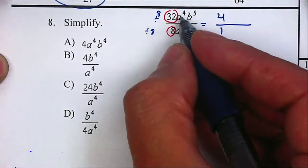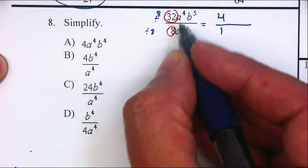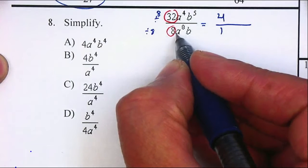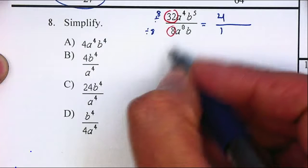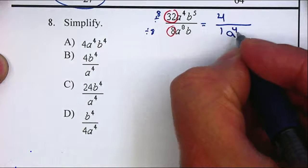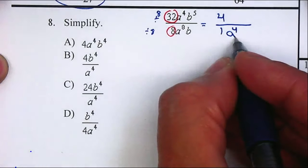Now, on the A's, we are going to cancel them. There are 4 on the numerator and 8 on the denominator. How many of them cancel? 4 of them. How many are left? 4 on the denominator. Remember, the ones that have the biggest exponent, that's where they're going to be left.